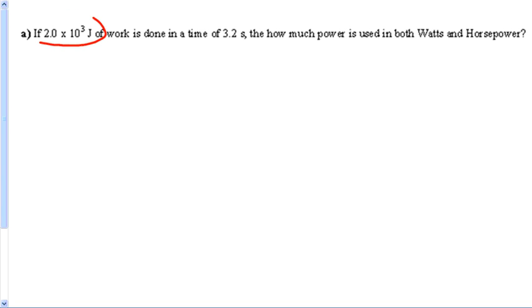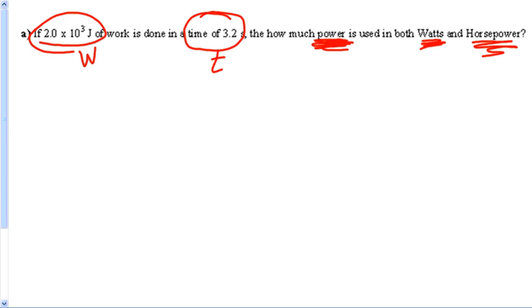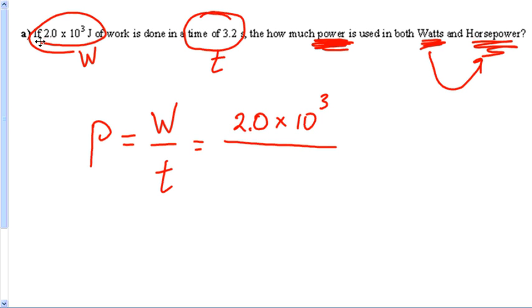First off, what is this? 2.0 times 10 to the third joules of work. That's work. Time of 3.2 seconds. That's time. And then the question says, what is the power in both watts and horsepower? Now, when I do the formula, my answer comes out in watts, which means I'm going to have to convert it to horsepower. So, what's the equation for power? Power is equal to work over time. This problem gave me work, 2.0 times 10 to the third, and it said that time is 3.2.